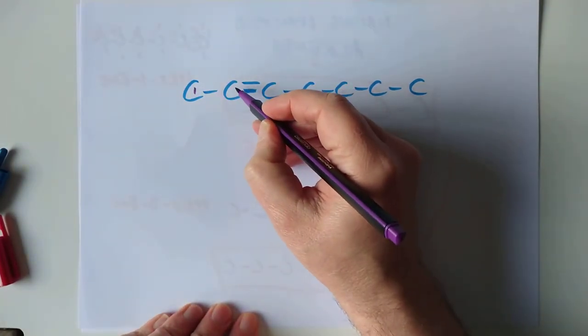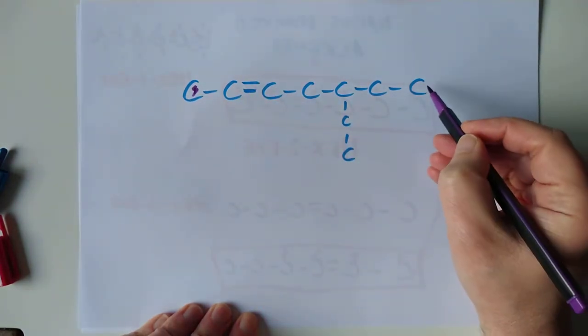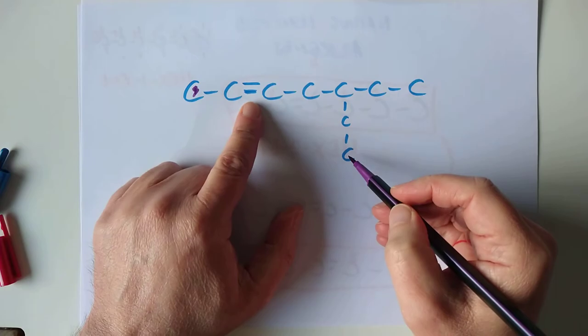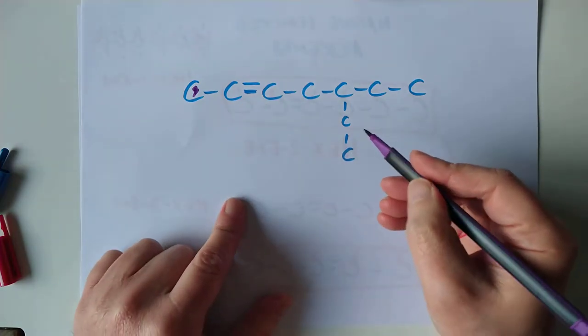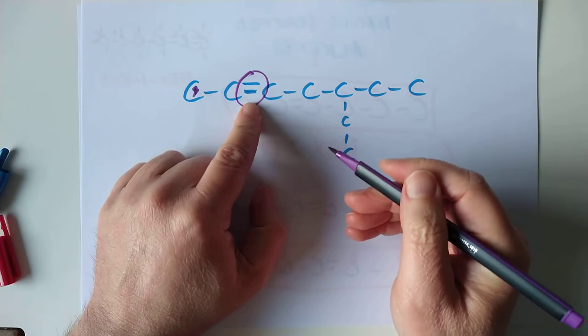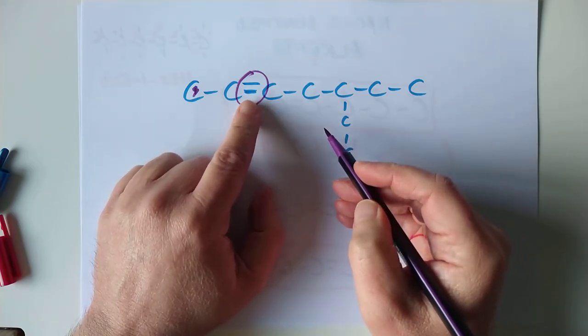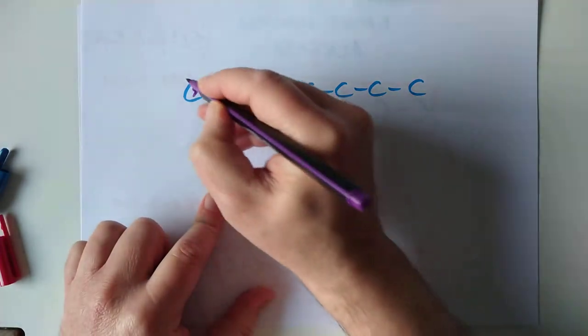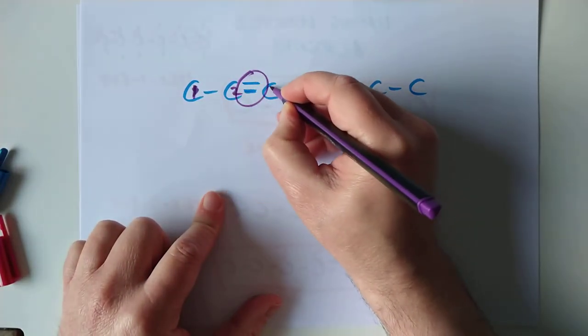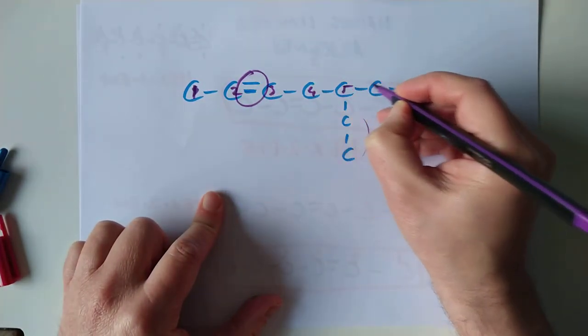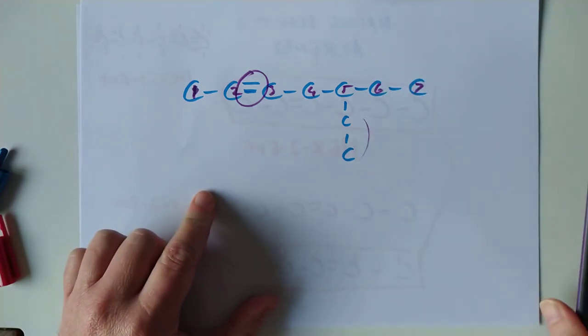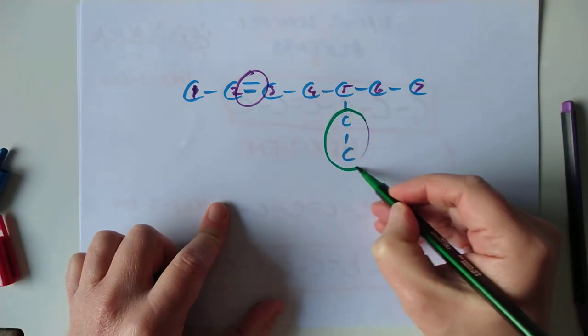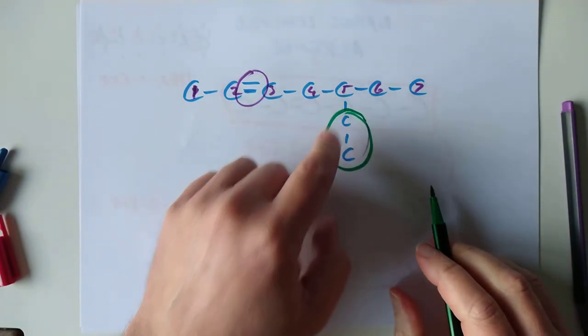So, 1... But I told you last time we're supposed to number nearest the branch. Not when you're dealing with alkenes. Remember, this is the daddy, so this is in charge. So we do have to number nearest the double bond. This is less important than this. So let's go 1, 2, 3, 4, 5, 6, 7. And this is our branch here. This is an ethyl branch, and it's on position 5.